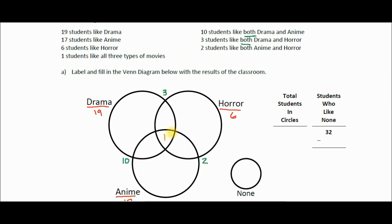Step four: fill in the overlap sections — the ones that look like the leaves on a flower. For example, we know three people like drama and horror, but one of those also likes anime, so that person is already counted. Three minus one is two. Similarly, two minus one is one for the anime-horror overlap, and ten minus one is nine for the drama-anime overlap. Those two sections in each petal have to add up to the green reference numbers.